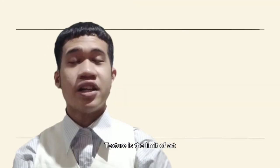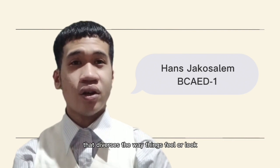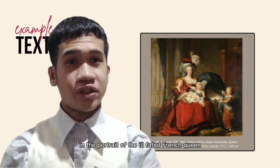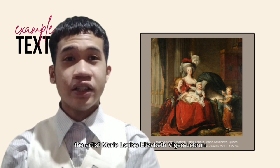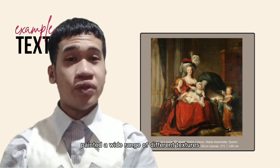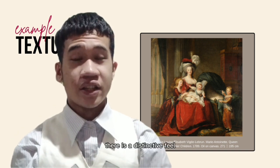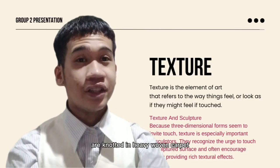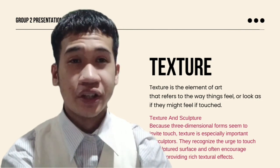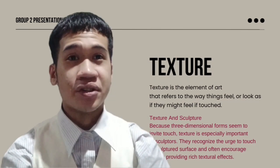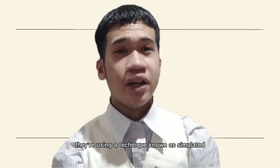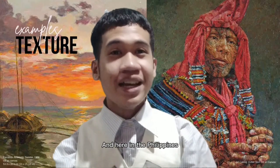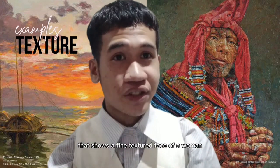Texture is the element of art that refers to the way things feel or look as if we may touch or feel it. In the portrait of the ill-fated French queen Marie Antoinette and her children, the artist Marie-Louise Elizabeth Vigée-Lebrun painted a wide range of different textures. There is a distinctive feel to the different materials used for the garments, the heavy woven carpet, the wooden furniture, and the smooth, soft skin of the figures. When painters try to make objects look rough or smooth, they're using a technique known as simulated or artificial texture. Here in the Philippines, we have Jack Kapluk's painting that shows a fine textured face of a woman.